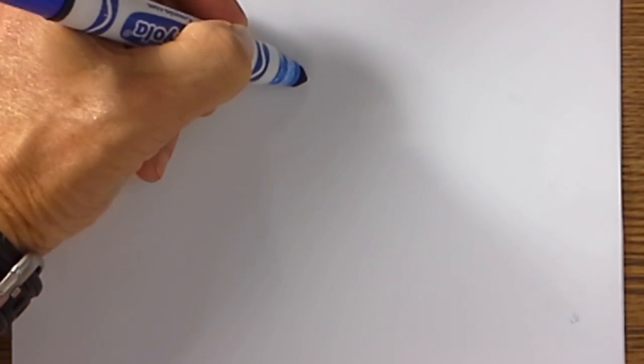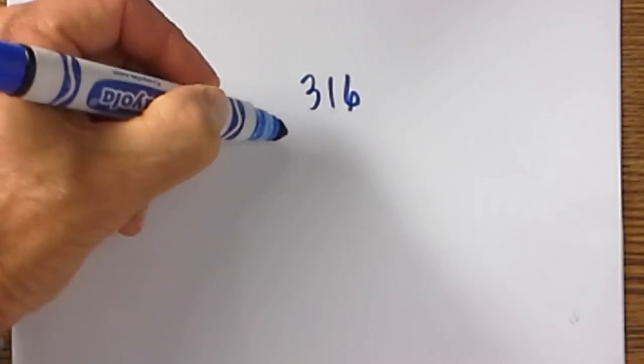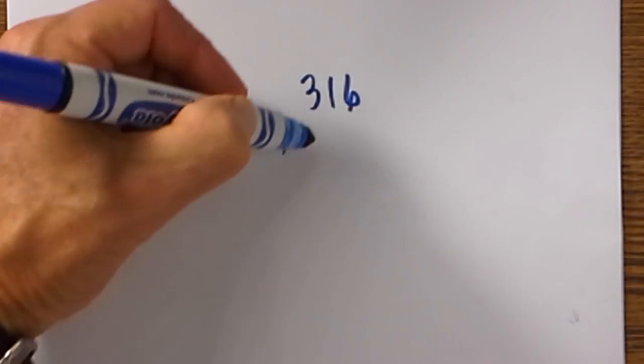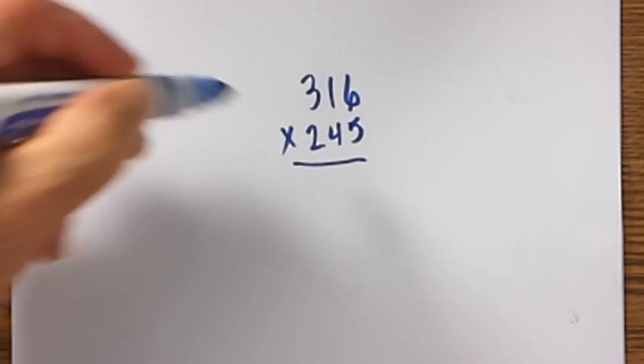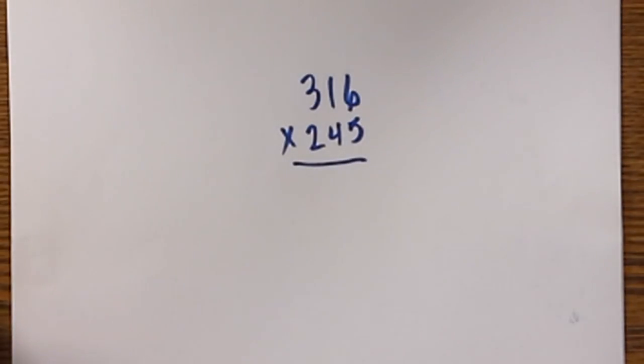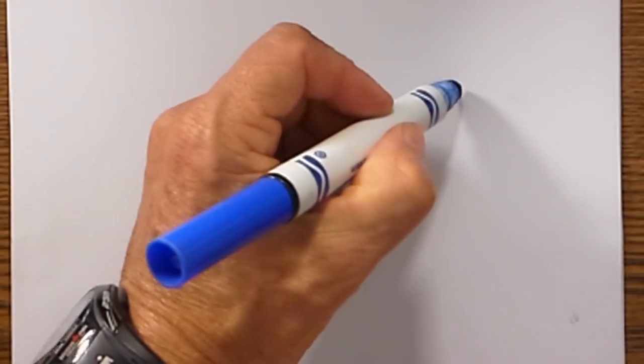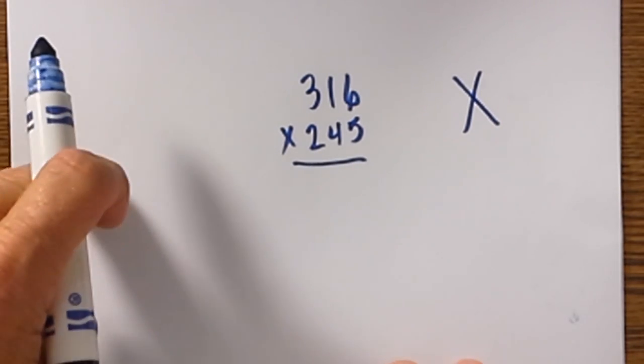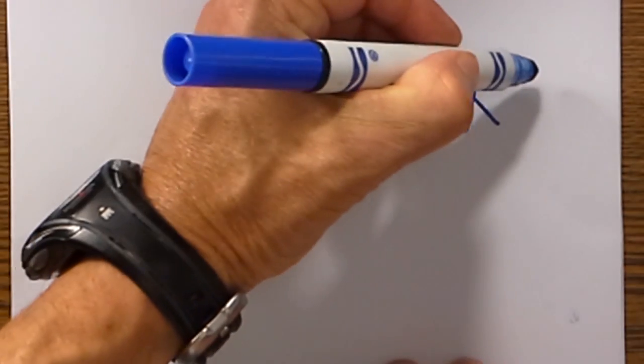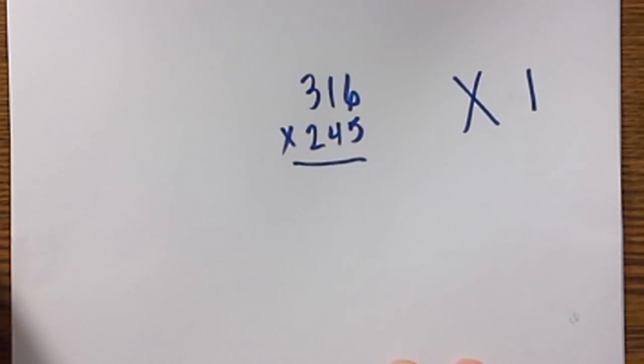Let's get started. Let's say we have 316 times 245. Here is the technique you can use. The first thing you need to remember is with cross multiplication, any time you can do a cross, always complete that before a vertical multiplication.